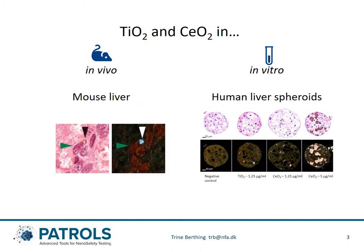The in vivo and in vitro examples are titanium dioxide and cerium dioxide in mouse liver and in human liver spheroids.